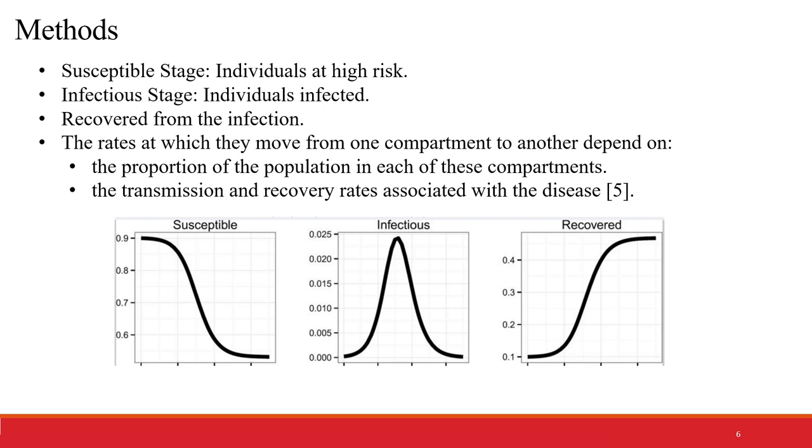The rates at which they move from one compartment to another, considering these to be a compartment, is first proportional to the population in each of these compartments: how many are susceptible, how many are infectious, and how many are recovered. Second, the transmission and recovery rates associated with the disease. This is the model that we are going to use in order to predict the number of cases.